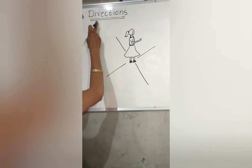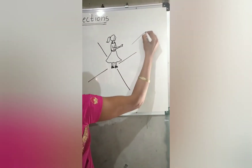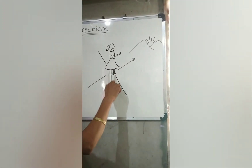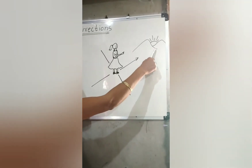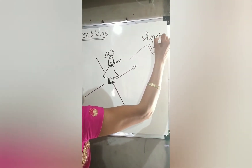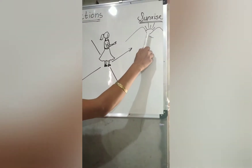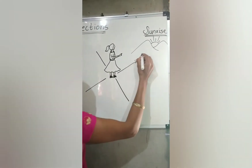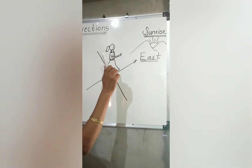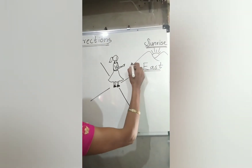Let's learn about directions. See carefully — here is a girl standing, facing towards the sunrise. Sun rises from this side, so this is the direction of sunrise. The direction which is at the sunrise side is called East. The girl is facing towards the sunrise side, so we can say her face is at the direction of East.